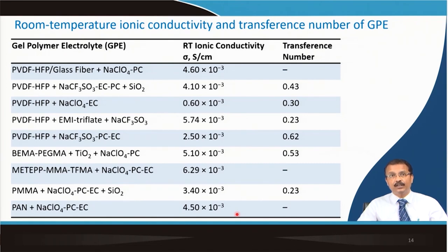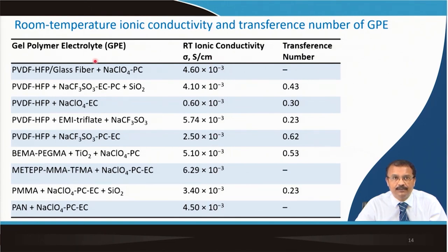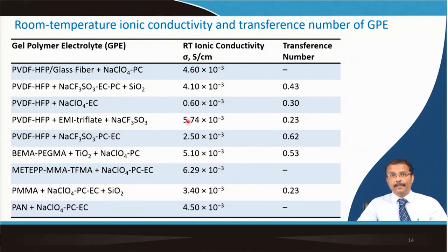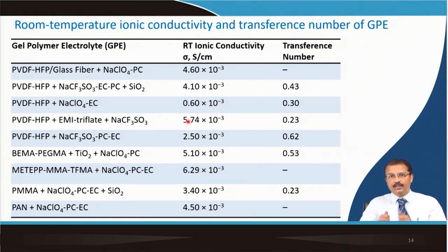The room-temperature ionic conductivity and transference number of various gel polymer electrolytes have been compared, and the conductivity range has not improved much — nothing with a dramatic change in order of magnitude is yet available. Still, further research is required. Gel polymer electrolytes will be particularly useful for flexible sodium ion cells, which is an interesting area of research where you can have a flexible battery that can be wrapped or made into a fiber form — a very interesting emerging area from the last decade.